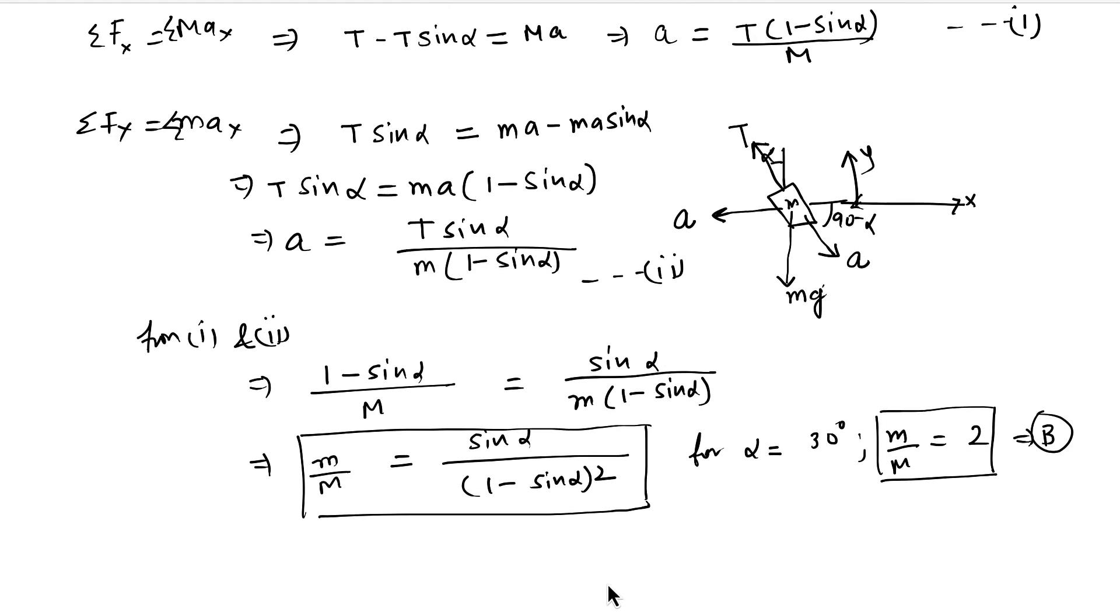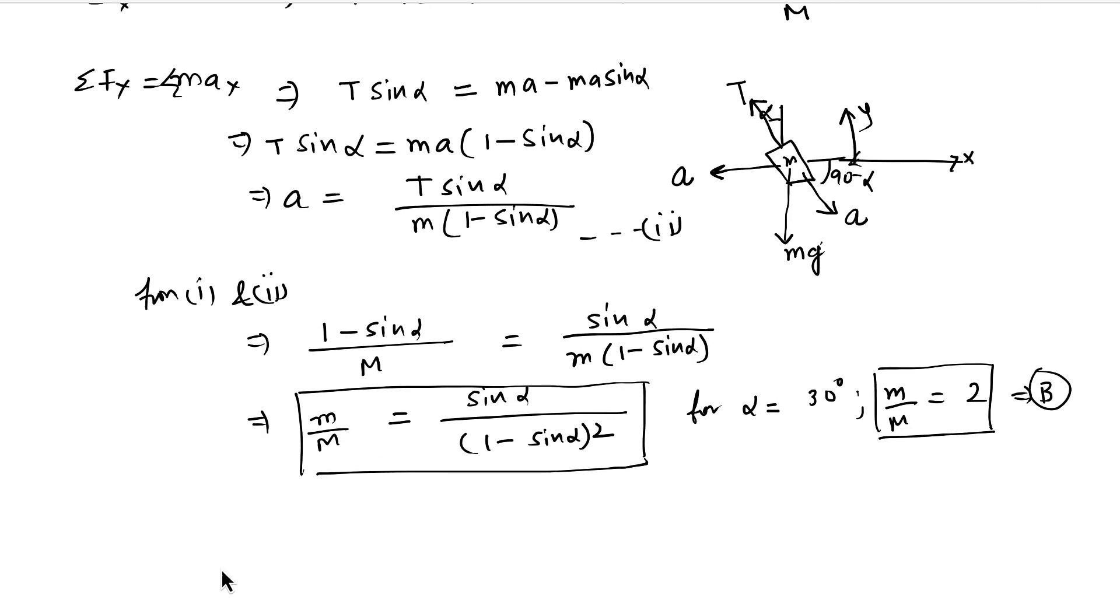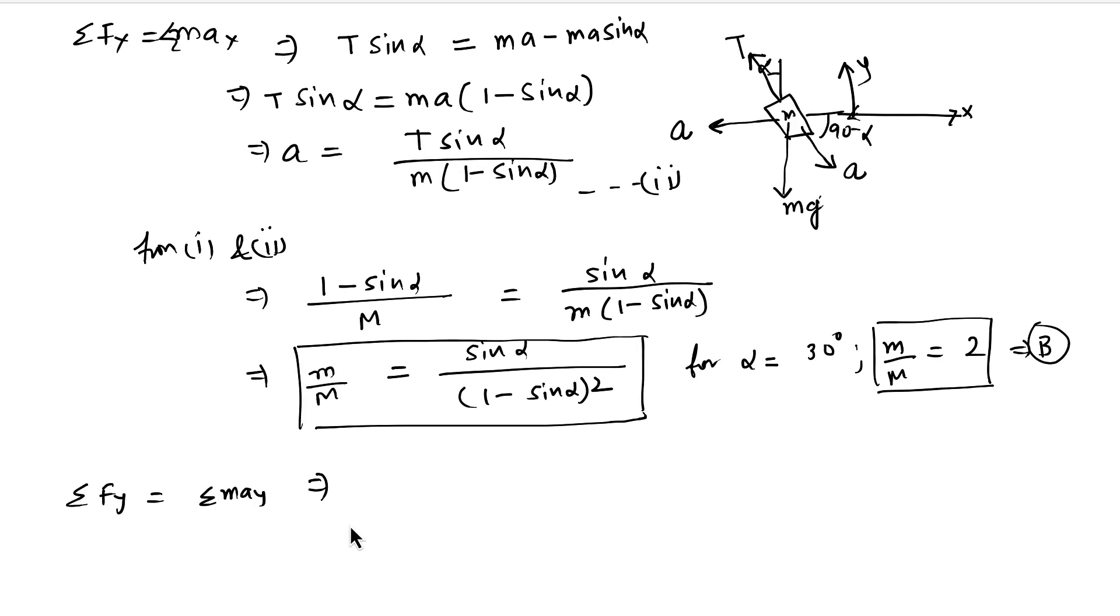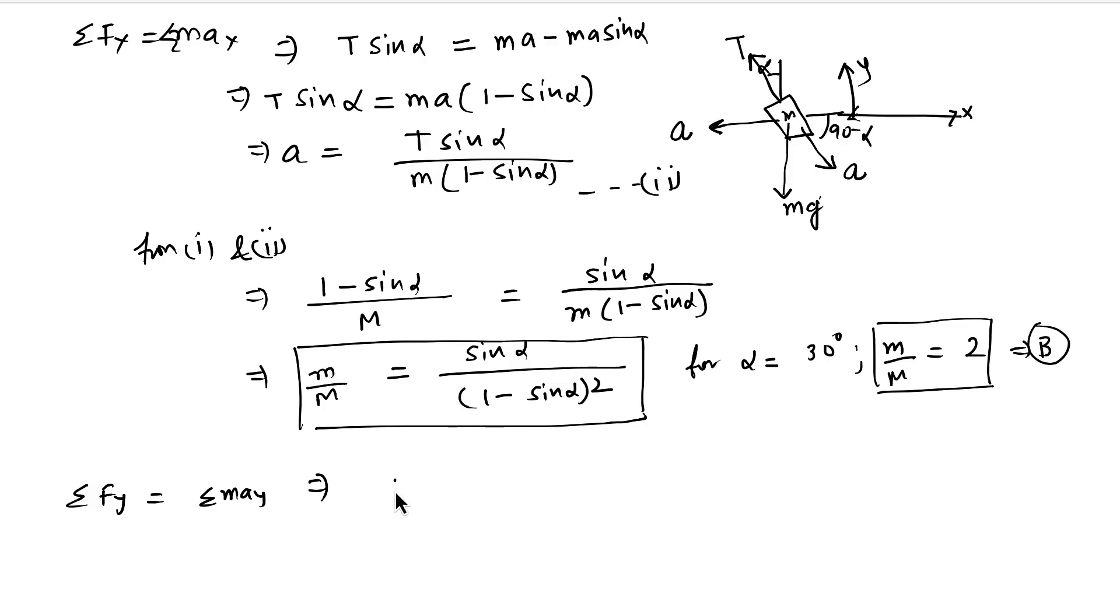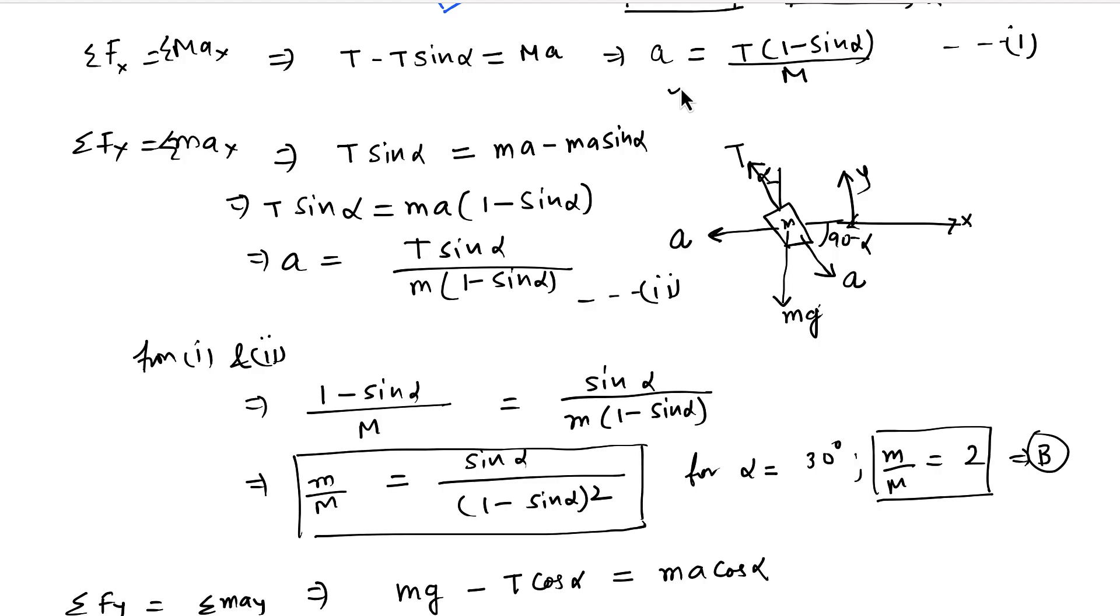Now what is the tension then? Let's say we want to compute the tension in this string, in this case. So we can write Fy equal to MAy for the other mass. And then that will give me Mg minus T cos alpha equal to MA cos alpha. And we can say Mg by cos alpha equal to T plus MA. And we can use A from equation 1.